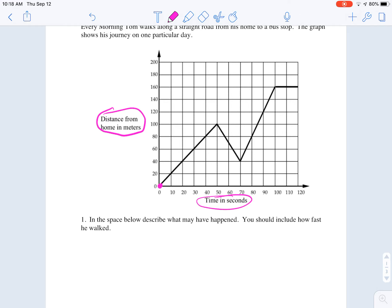So we see that we start off here, then we're increasing, then we're decreasing, then we're increasing, then we're constant. And what we're going to be asked to do in this question is to describe what might have happened along this journey and how fast he walked.